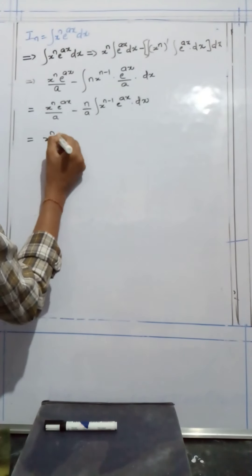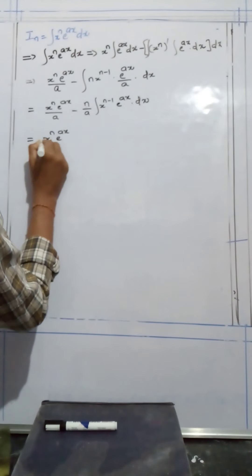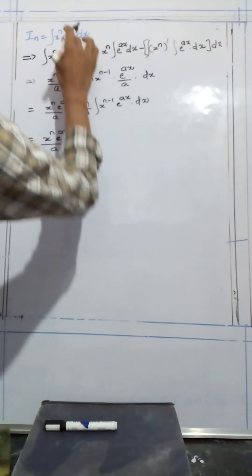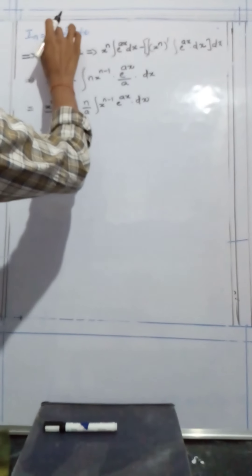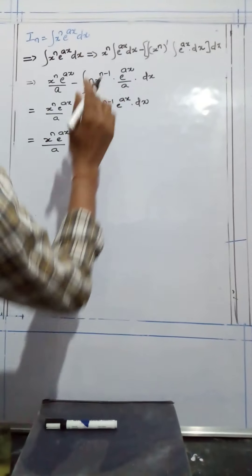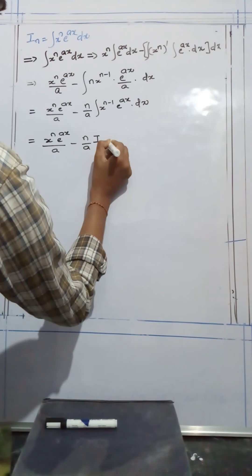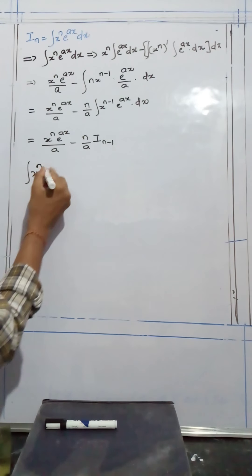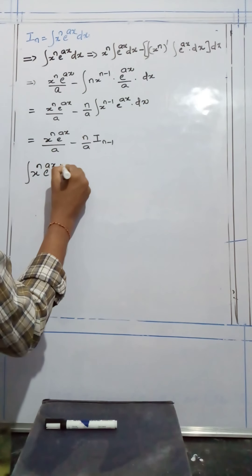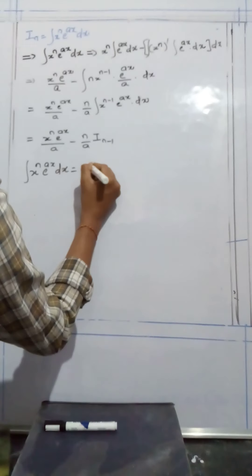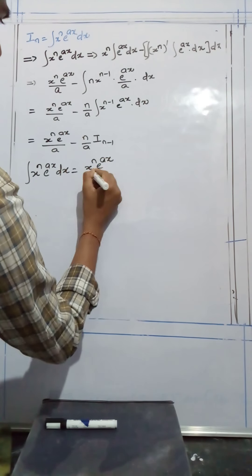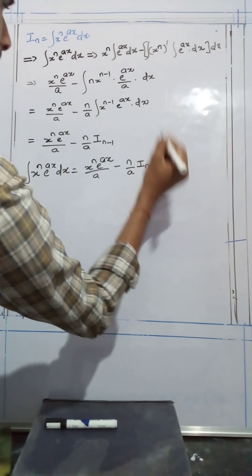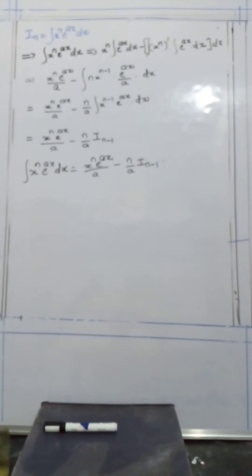That is equal to x to the power of n, e to the power of ax, divided by a, minus n by a, times I_{n-1}. Therefore, the integral of x to the power of n, e to the power of ax, dx is equal to x to the power of n, e to the power of ax, divided by a, minus n by a, times I_{n-1}. That is the process. Thank you.